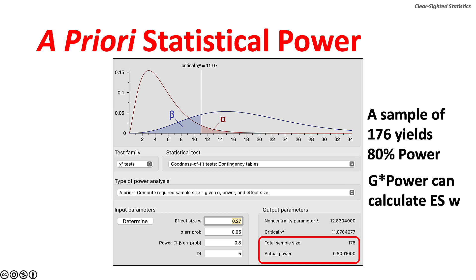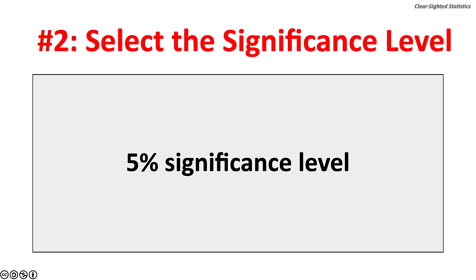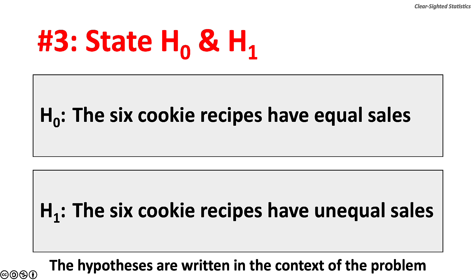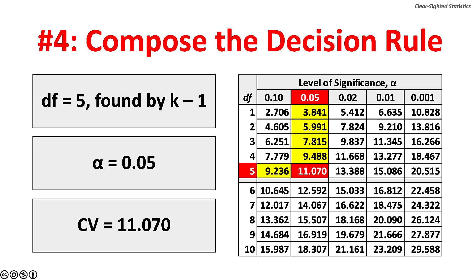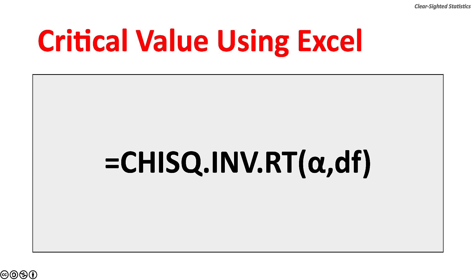Step 2: select the significance level — 5% has been selected. Step 3: state the null and alternate hypotheses. The null hypothesis: the six cookie recipes have equal sales. The alternate hypothesis: the six cookie recipes have unequal sales. The hypotheses should always be written in the context of the problem. Step 4: compose the decision rule. The critical value for Chi-square with 5 degrees of freedom and a 5% significance level is 11.070. The decision rule: reject the null hypothesis if Chi-square is greater than 11.070.